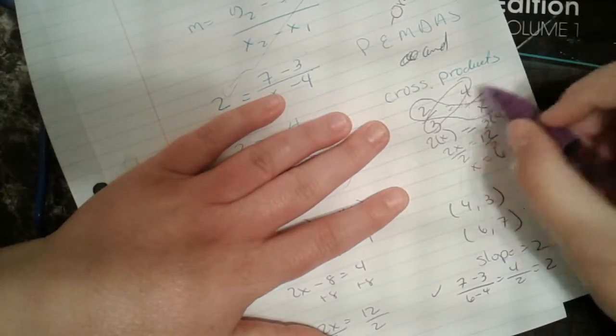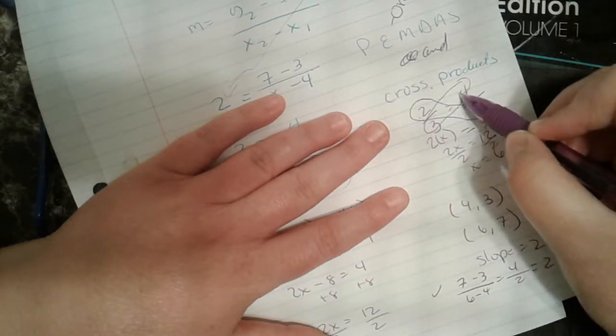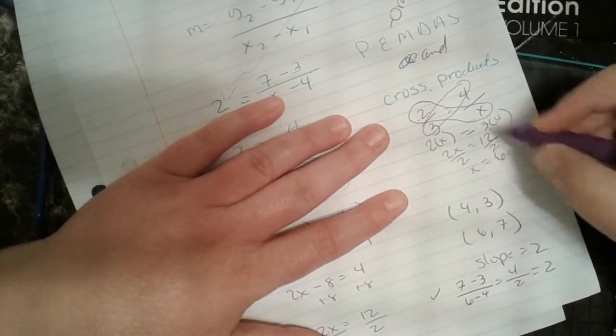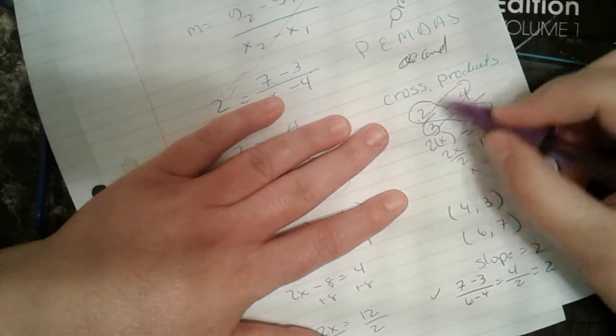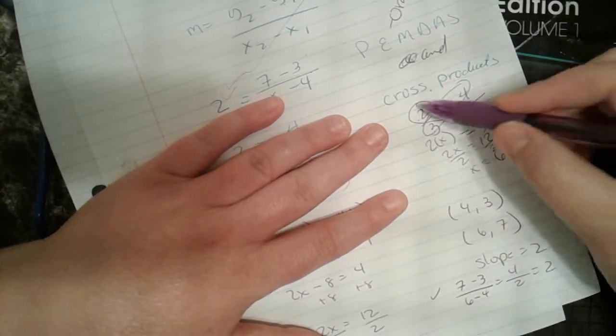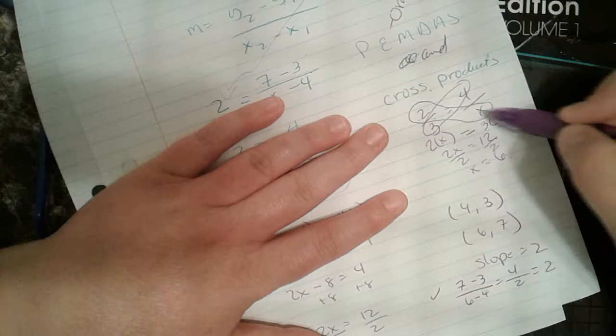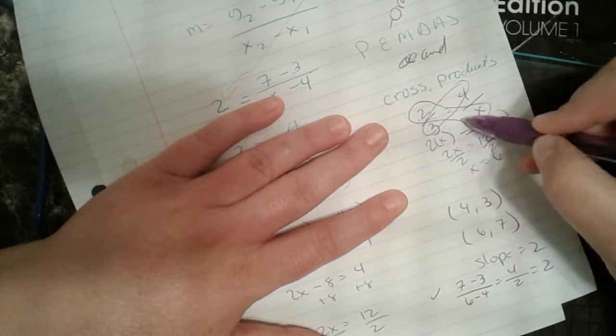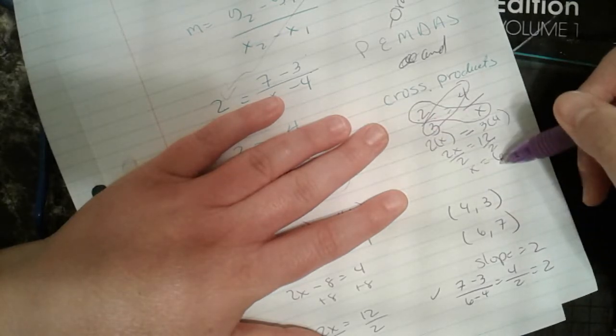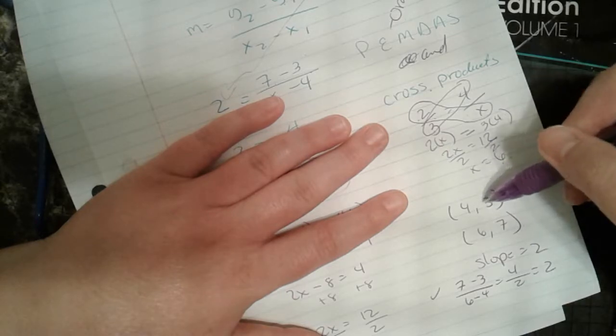And you can probably figure that out too because 2 times 2 is 4. 3 times 2 is 6. So we use the cross products. And that's literally drawing a cross, like drawing a multiplication symbol across your equation and solving for that missing variable. So that's exactly what we're going to do here.